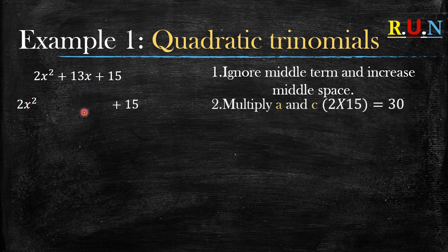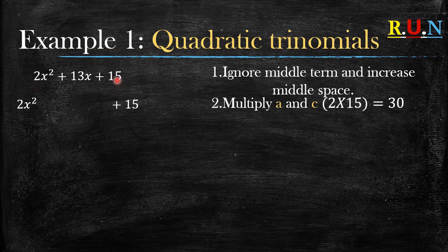Rule number two: multiply a and c. What is our a and c in this question? Our a is 2, our c is 15, and the 13 is b. So what is 2 multiplied by 15? It equals 30.